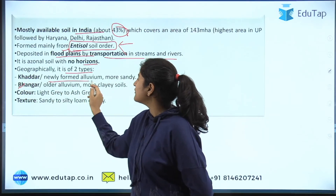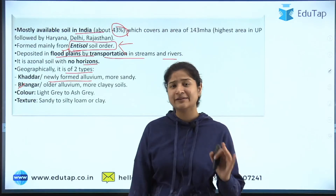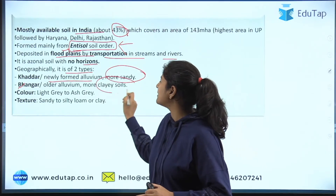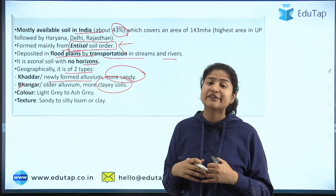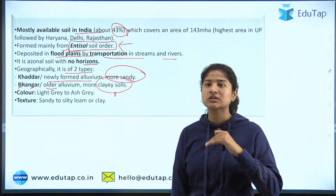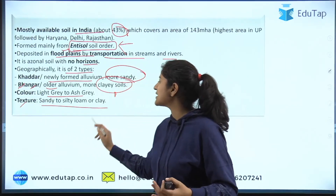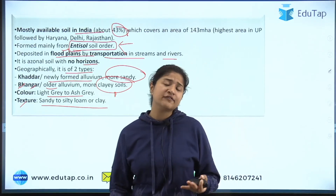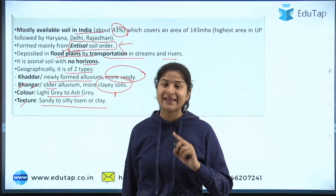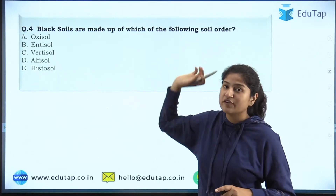Alluvial soil is of two types: Khadar and Bangar. Khadar is newly formed alluvium — recently transported by river action. When it remains in an area longer, it changes: initially sandy, it becomes more clay-like over time due to continued deposition, and is then called Bangar soil. The color of alluvial soil varies from light gray to ash gray and its texture ranges from sandy to silty loam or clay. This soil type has been asked two to three times in NABAR examinations.